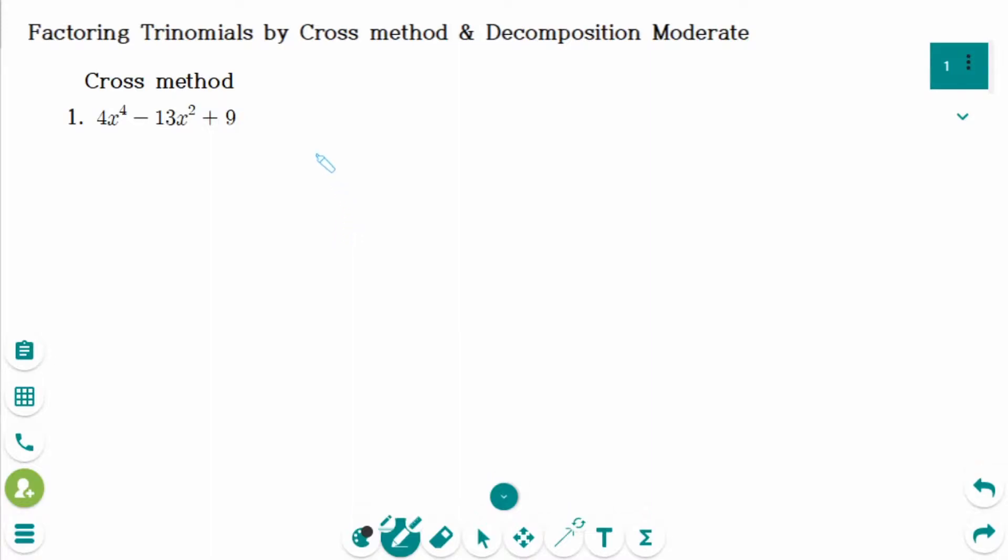This trinomial can be rewritten as 4x squared squared minus 13x squared plus 9, and I will use substitution.